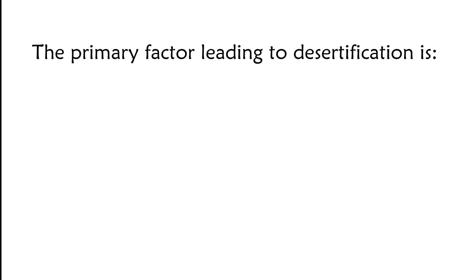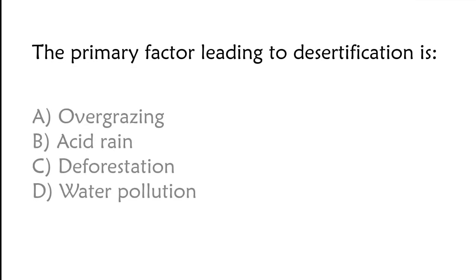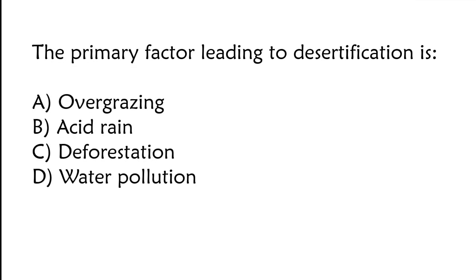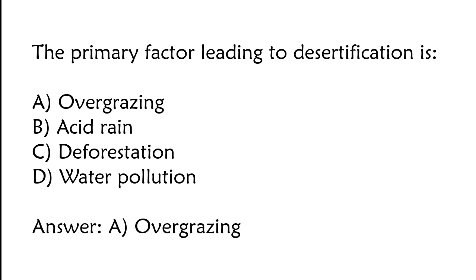The primary factor leading to desertification is: A) overgrazing, B) acid rain, C) deforestation, D) water pollution. The correct answer is option A, overgrazing.